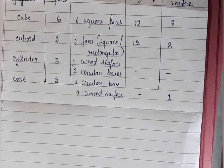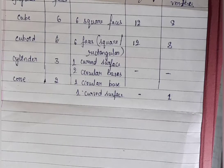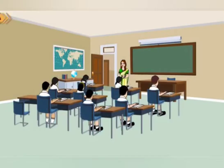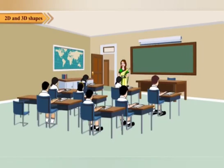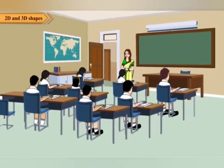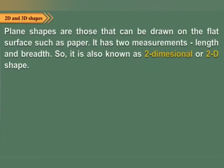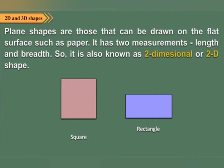When we see an object or a cubical figure from different directions, it appears differently. Children, you have learnt about plain and solid shapes in class 2. Plain shapes can be drawn on a flat surface such as paper. They have two measurements — length and breadth — so they are also known as two-dimensional or 2D shapes.